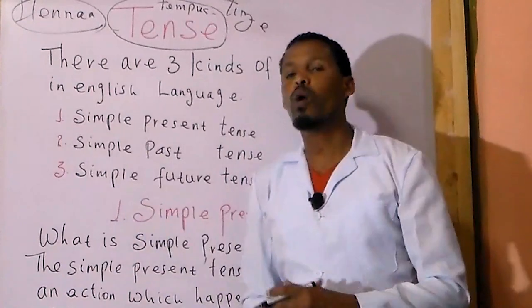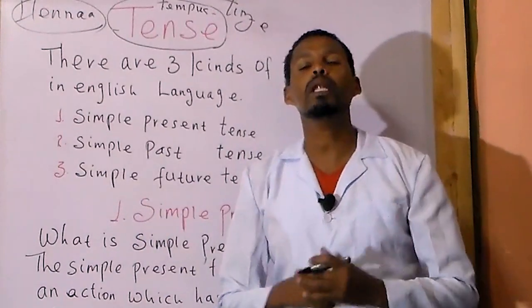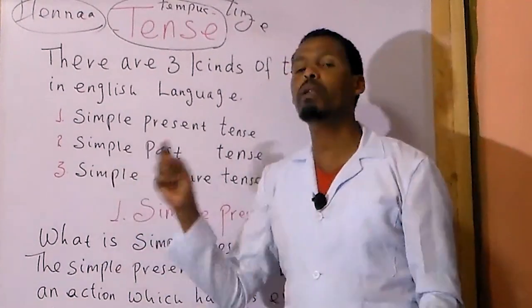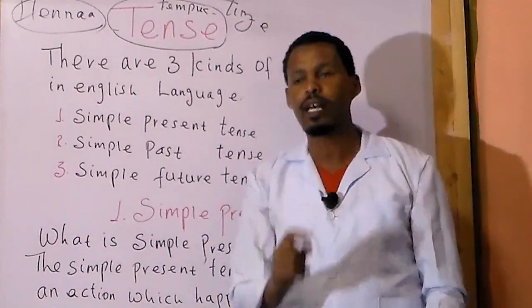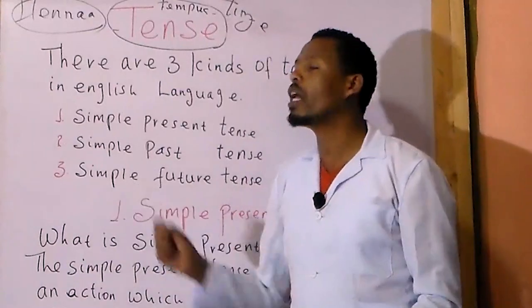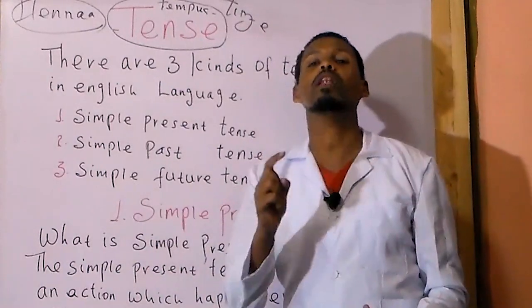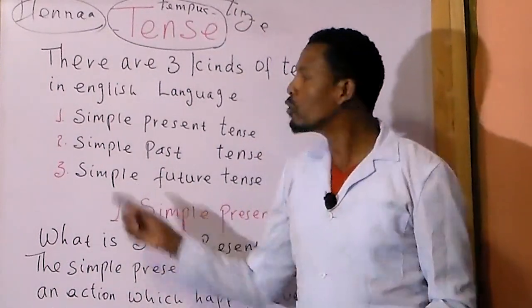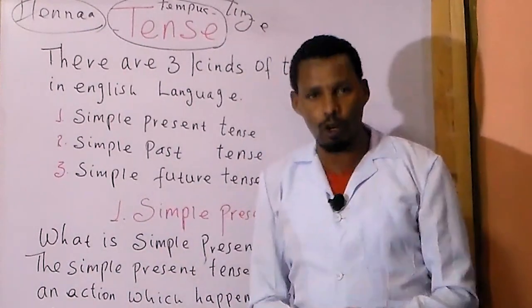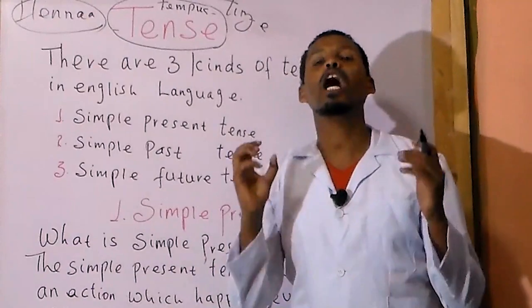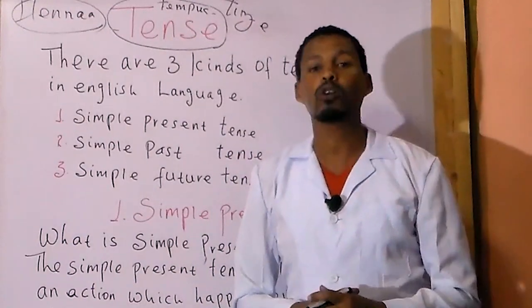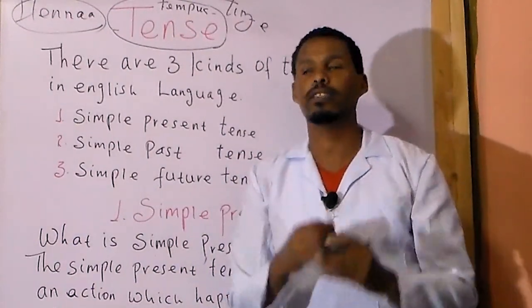The first one is simple present tense, the second one is simple past tense, and the third one is simple future tense. Some books also add conditional tenses, or conditional sentences.